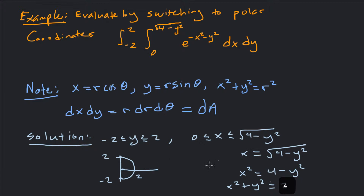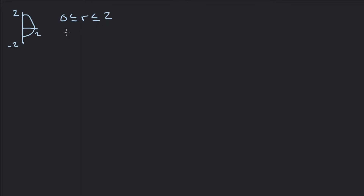Setting x equal to the rightmost bound, squaring both sides gives x squared plus y squared equals 4 — that's a circle of radius 2. Since it's the positive square root, this is the right half of that circle. It makes sense to switch to polar coordinates whenever our region of integration is a circle or part of a circle, or has polar symmetry. In polar coordinates, r goes from 0 to 2, and theta goes from negative pi over 2 to positive pi over 2.